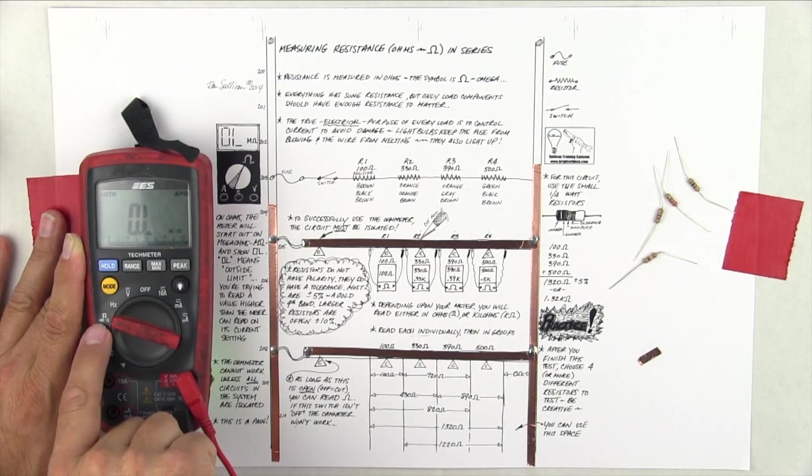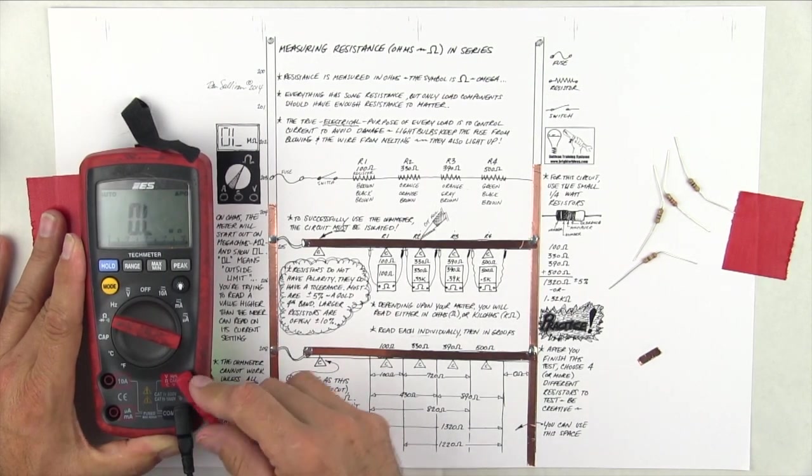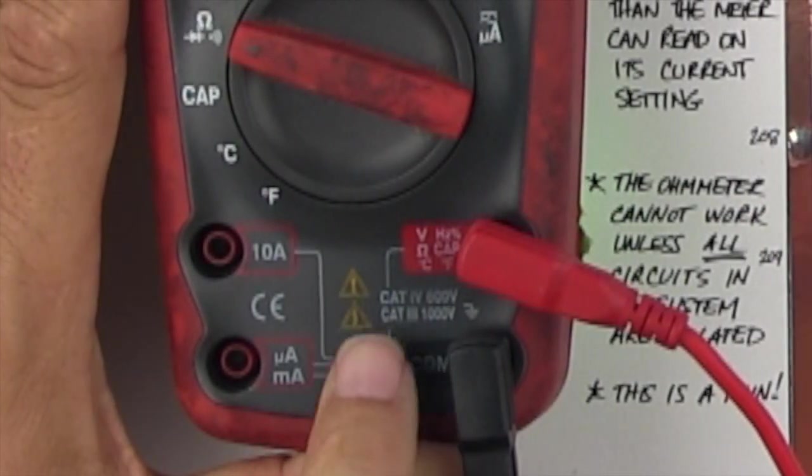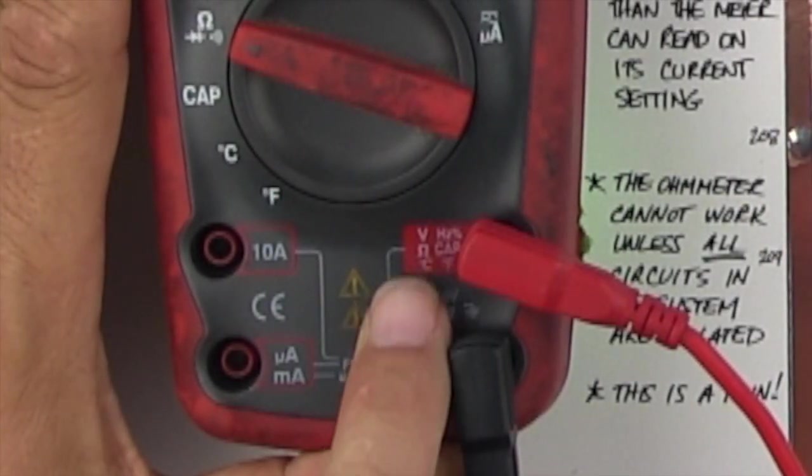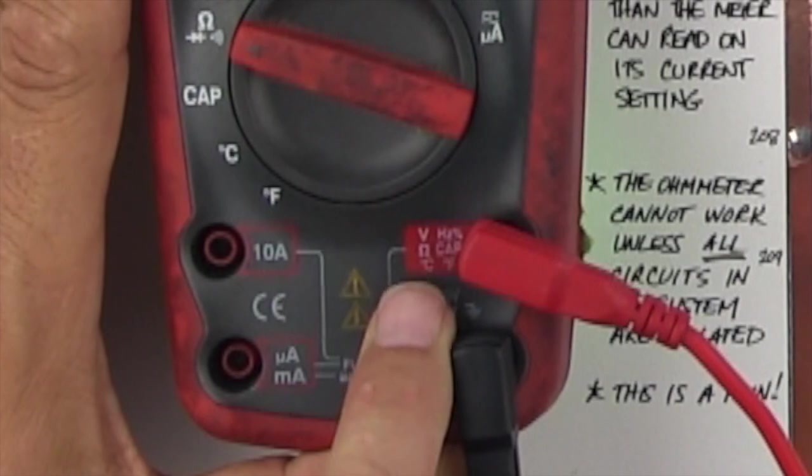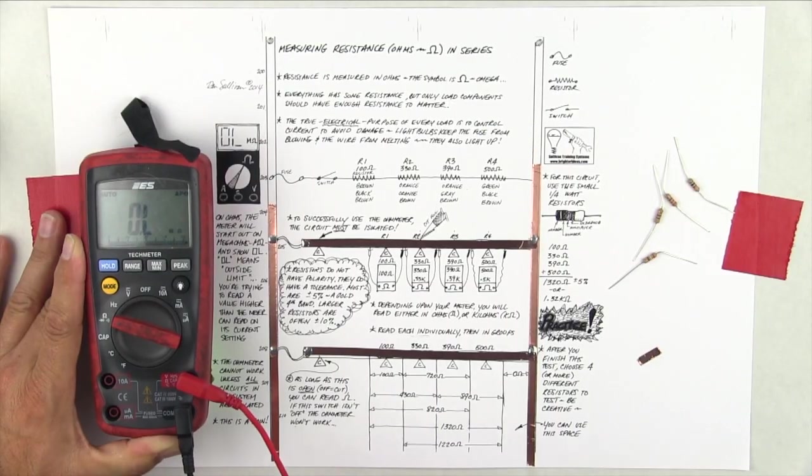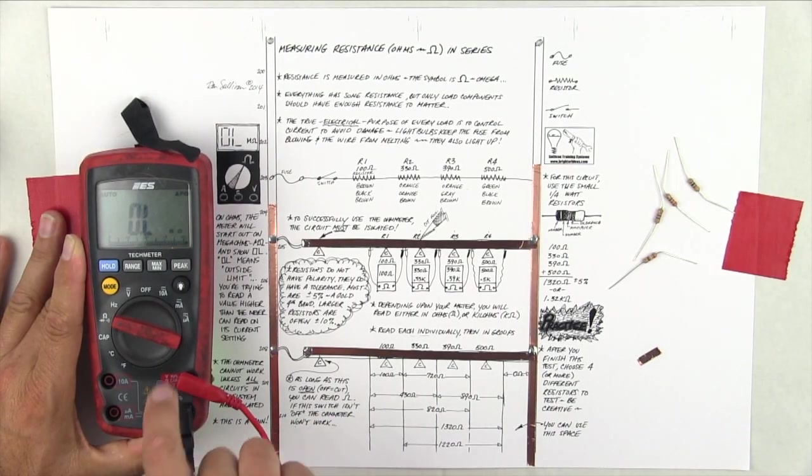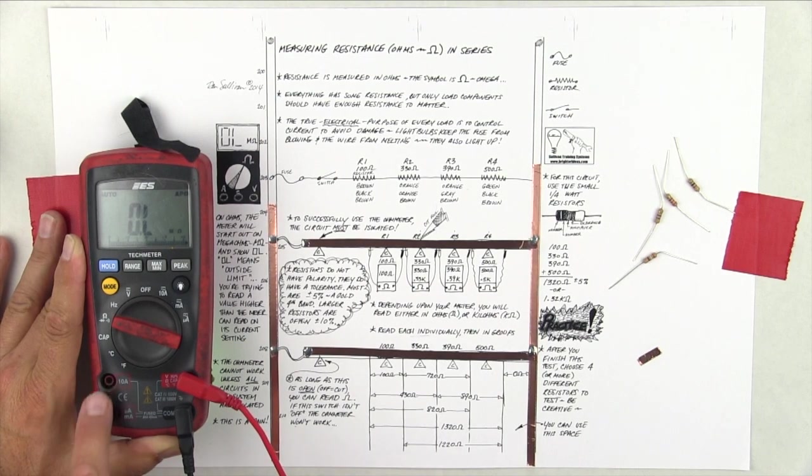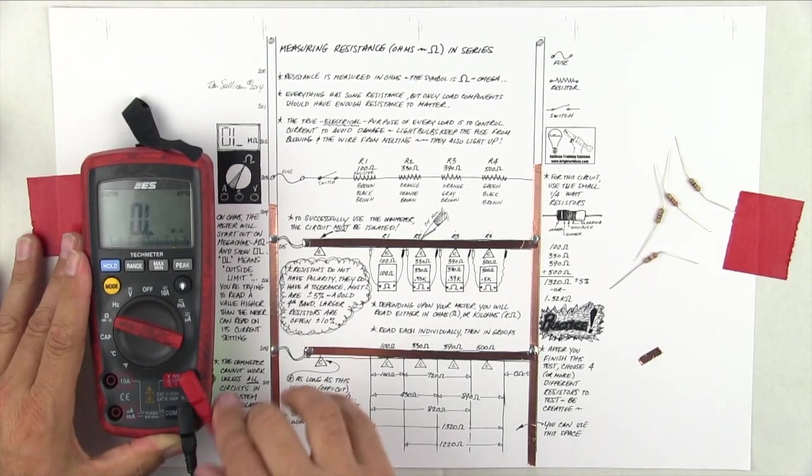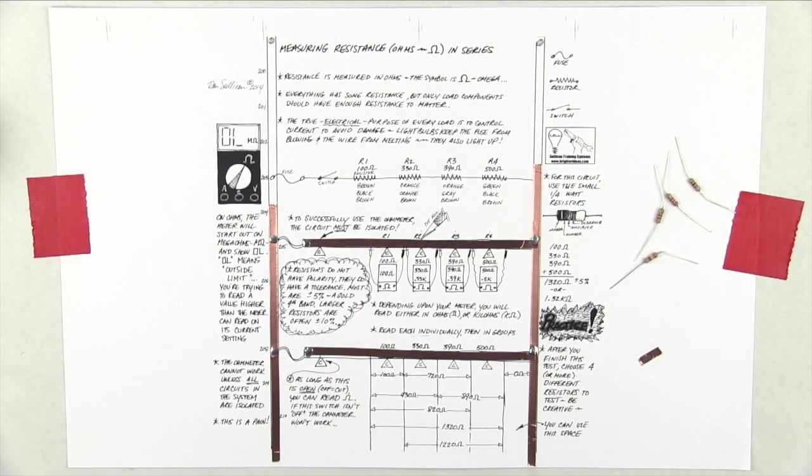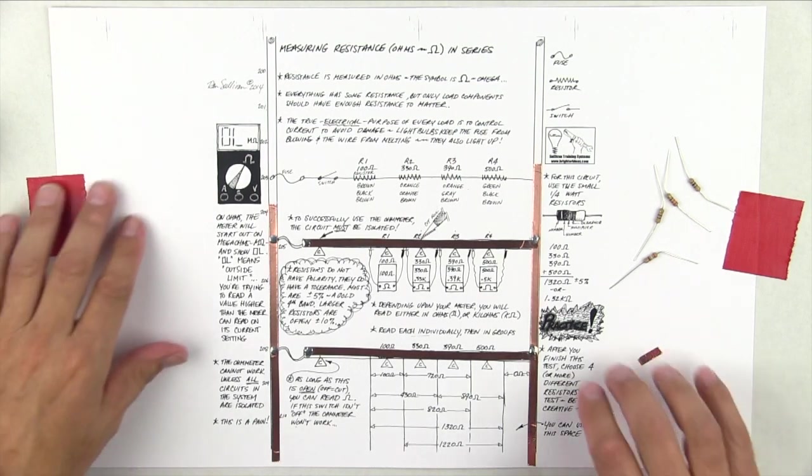The meter is set to the ohms setting. We're also into just the normal, nominal volt-ohm, temperature, capacitor, frequency, and percentage duty cycle are all here. Amps and milliamps are on this side, so we're going to leave it here. There's your first kind of meter doohickey thing.